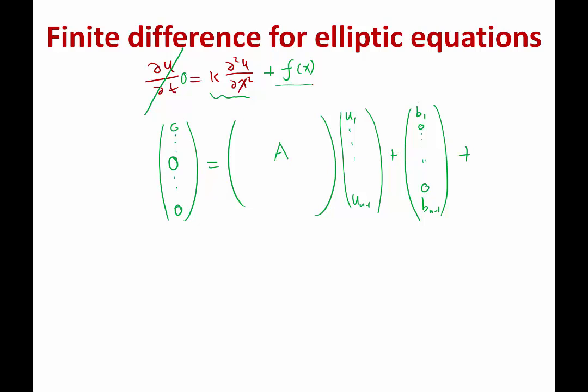Student: It's just a vector with the sampling point of f. Exactly, it's just a vector of the samples of f at delta x, 2 delta x, 3 delta x, etc.